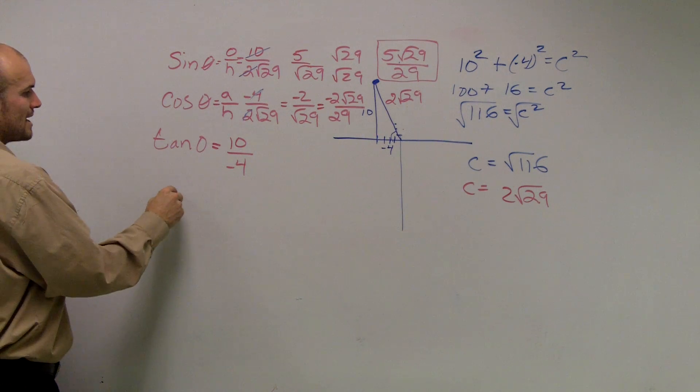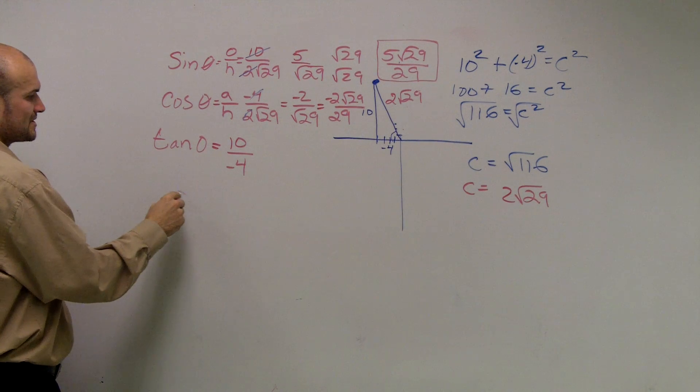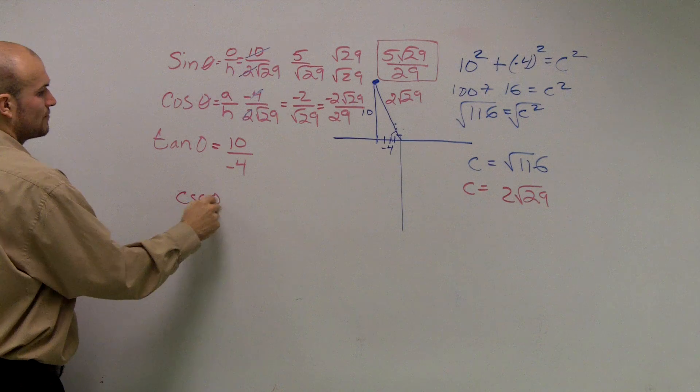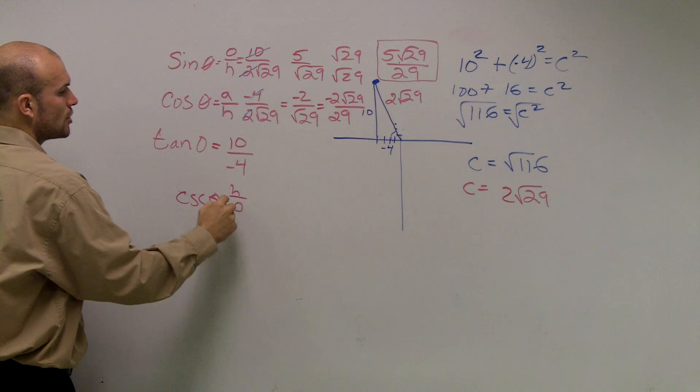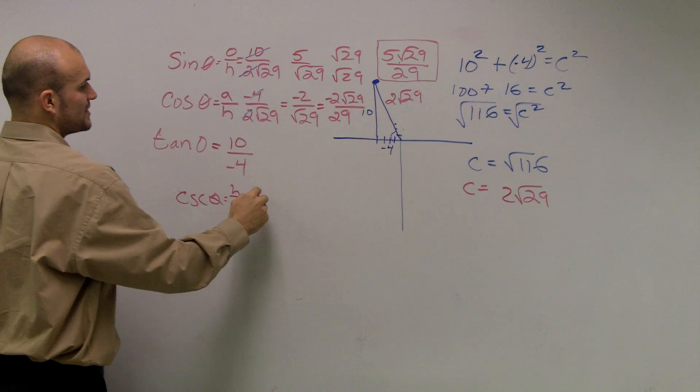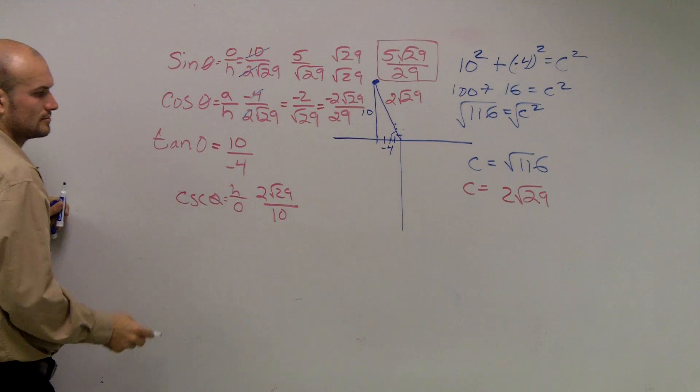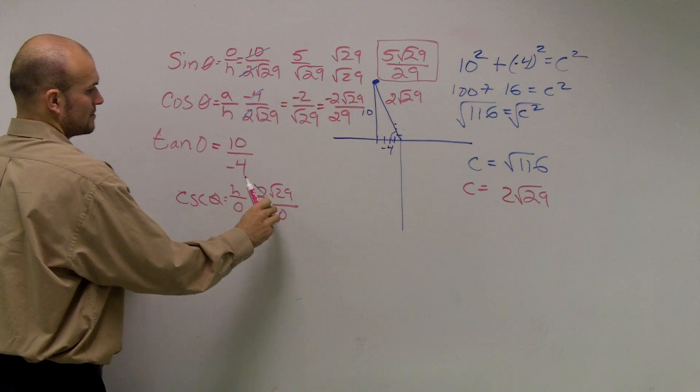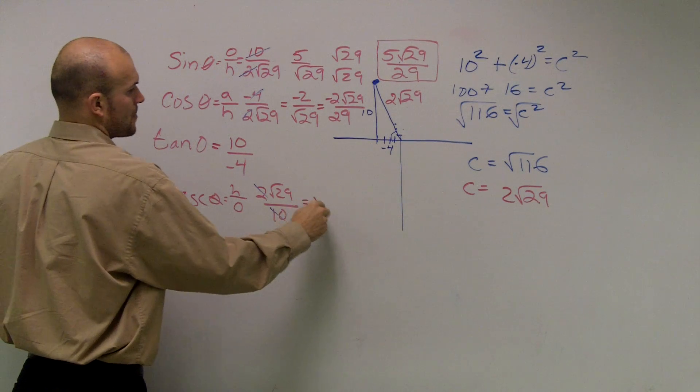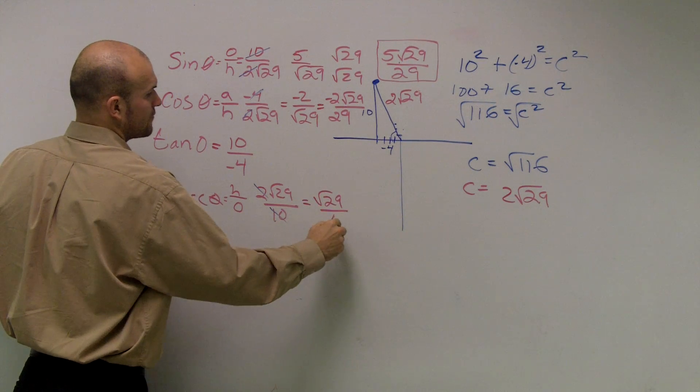I have cosecant, which is the reciprocal of sine, which is hypotenuse over opposite. So all I'm going to do here is take 2, radical 29, over 10. Well, those cancel out to give me radical 29 over 5.